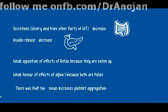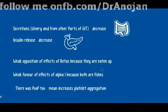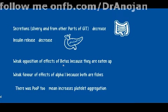Alpha-2 has weak opposition of beta effects and weak favorability of alpha-1 effects - it is not completely opposing betas. Beta-1 has effects on cardiac and renal systems, while beta-2 has effects on various structures including bronchodilation and increased insulin secretion. We will discuss beta effects in detail next.